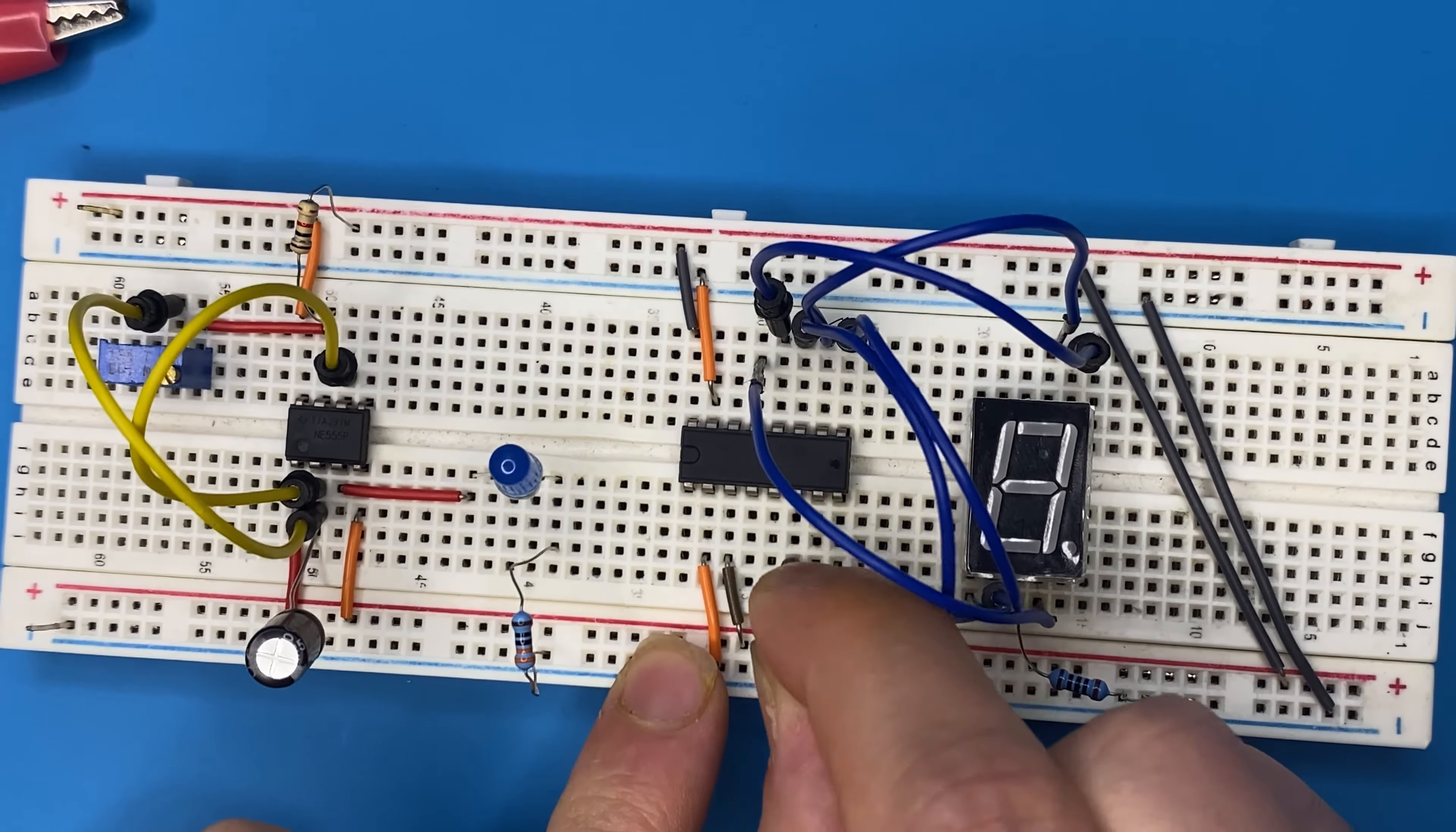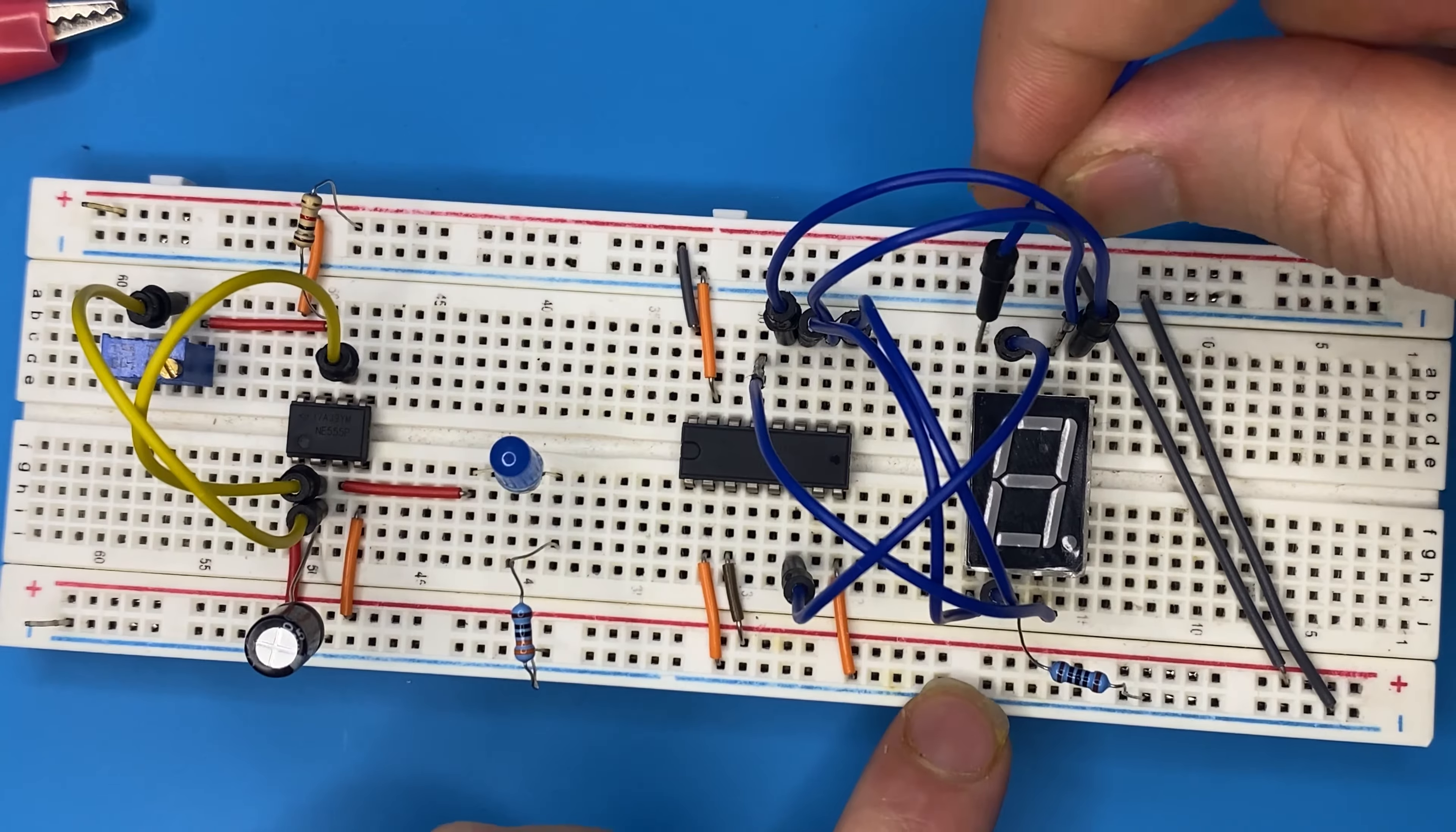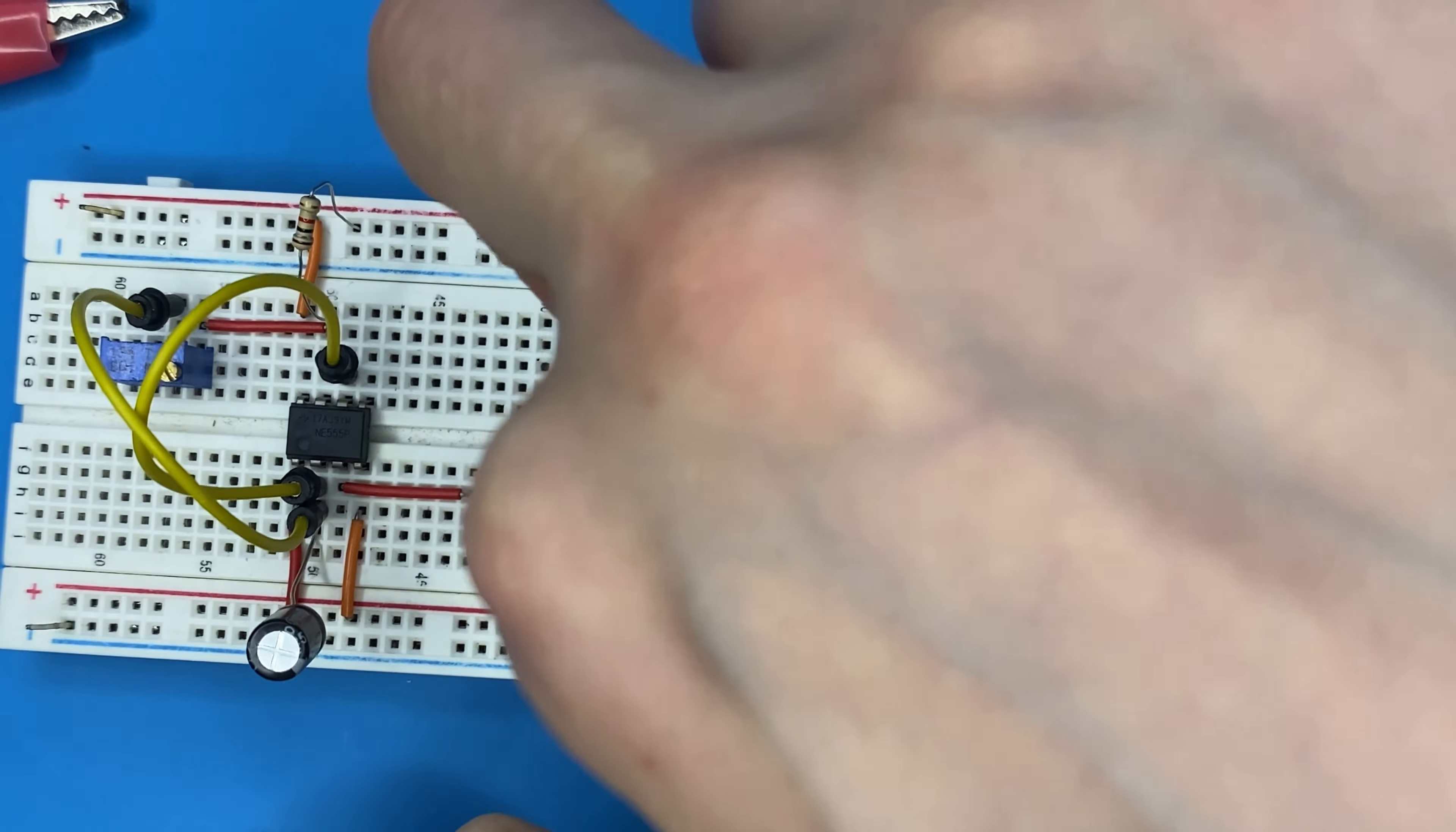Then we have pin 6, which is going to be connected to—I'm sorry—to segment F. And the last one, segment G, is going to be connected to pin 7, which is over here.